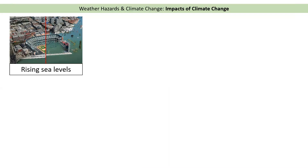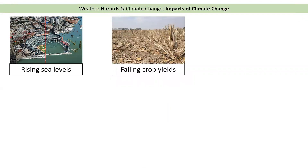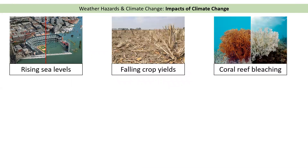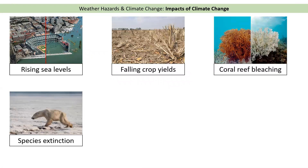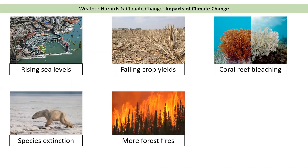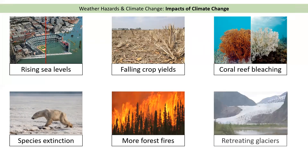Some examples are sea levels rising, crop yields falling — so the amount of crops we get falling — something called coral reef bleaching, which is where the coral reefs die out and go a white colour, species like the polar bear going extinct, more forest fires (we've seen lots of that in Australia and Brazil in the last year), and something called retreating glaciers.